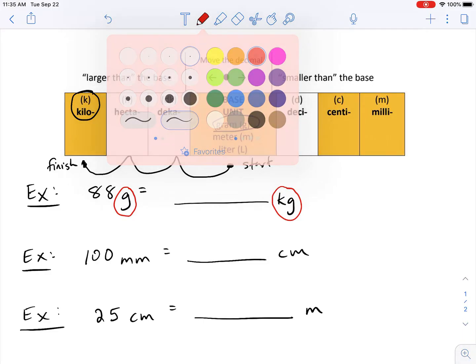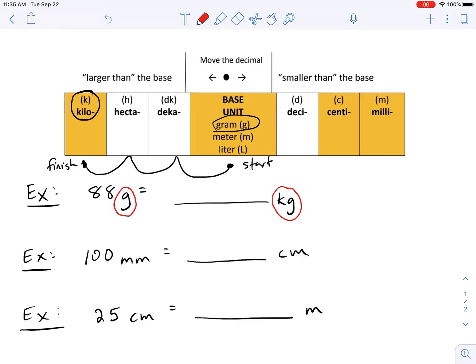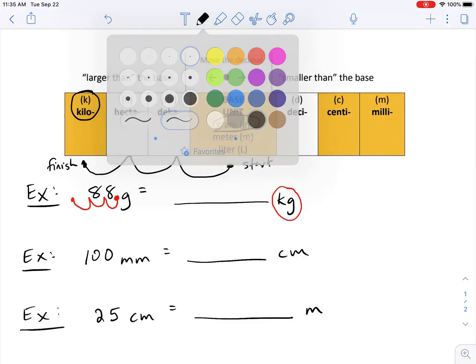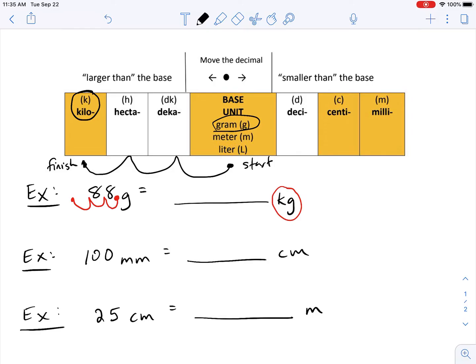So on my 88, I know that the decimal exists right here and I need to move that decimal over three spots to the left. So one, two, three. And anytime you have an empty space, as you can see, we've moved the decimal and there's nothing there, we fill that in with a zero. So our final answer should be 0.088 kilograms.